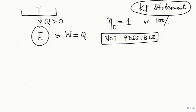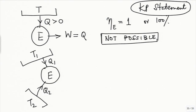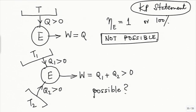Now, the next question we have to ask is: suppose instead of one reservoir, I have two reservoirs. The engine absorbs heat from two reservoirs — Q1 greater than 0, Q2 greater than 0. Is this possible? Of course, while asking this, I have to say that T1 is not equal to T2.